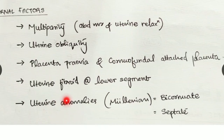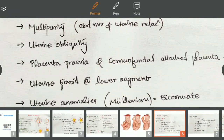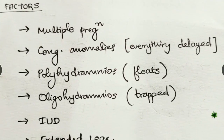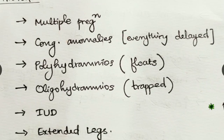Uterine anomalies such as Mullerian anomalies — bicornuate uterus or septate uterus — can also cause breech and malpresentations. Fetal factors include multiple pregnancy: in twin pregnancy, even if the first baby is at vertex presentation, there is a high possibility of the second baby being in a breech position. Congenital anomalies affect fetal maturity and development, which in turn delays rotation and alignment.